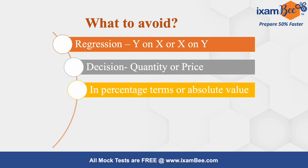The third mistake is often made while choosing whether to take a given variable in percentage terms or in absolute terms. You have to look at the equation you are applying or the solution you are trying to find — whether it is in absolute term or value term. If it is in percentage terms, take the variable in percentage terms; if you are applying the equation in absolute terms, take the variable in absolute terms.